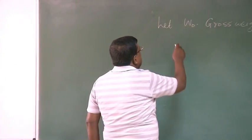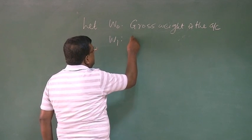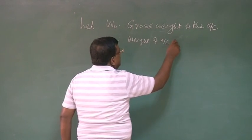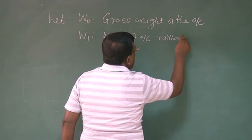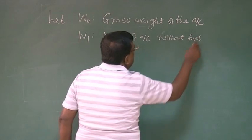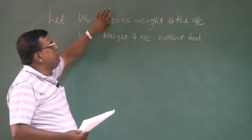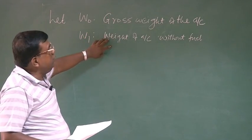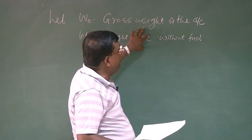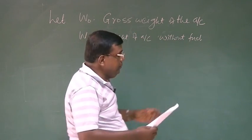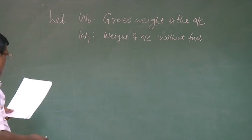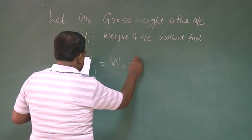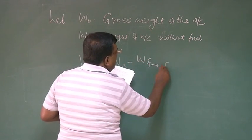Let W₁ be the weight of aircraft without fuel. Please understand, in the gross weight, the payload weight, structure weight, fuel weight, everything is included. In W₁, structure weight, payload weight, any other weight is included except the fuel weight. So I can write W₁ equals W₀ minus Wf, where Wf means fuel weight.